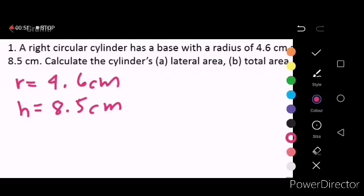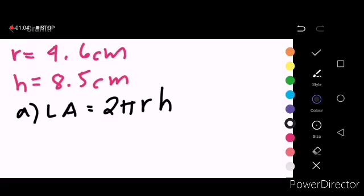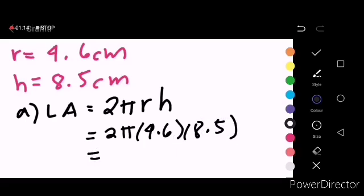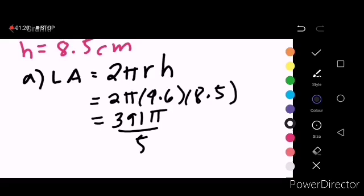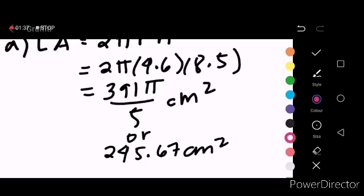Starting with the lateral area, the formula is just 2πrh. Substituting the given, we will have 2π times 4.6 times 8.5 centimeters, and that is equal to 391π/5 square centimeters. You can also write your answer using a decimal value, which is equivalent to 245.67 cm².